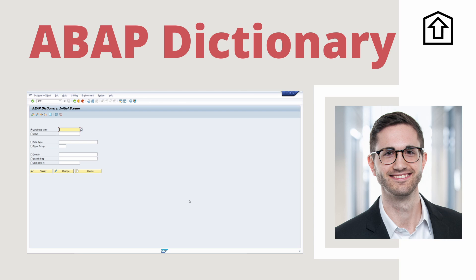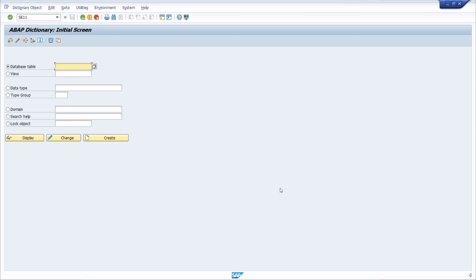Welcome to this video. The ABAP dictionary, formerly known as the data dictionary with transaction code SE11, is one of the most important transactions in SAP ERP and SAP S/4HANA. What distinguishes the ABAP dictionary, why you need this transaction for ABAP development, and which useful functions it has, you will learn in this video. Let's get started. Here we are in the ABAP dictionary in transaction code SE11.